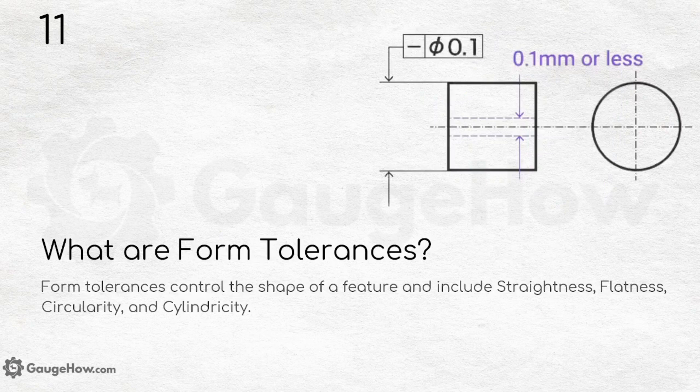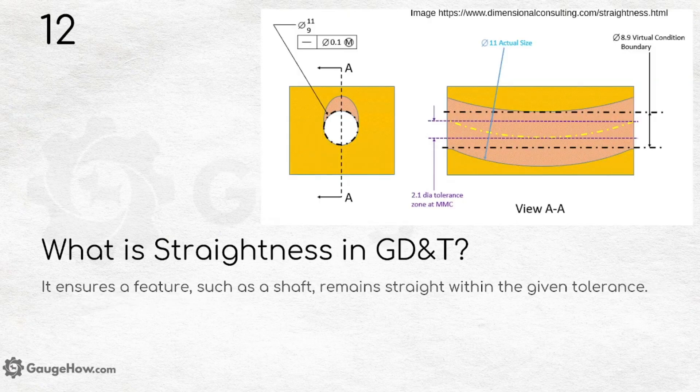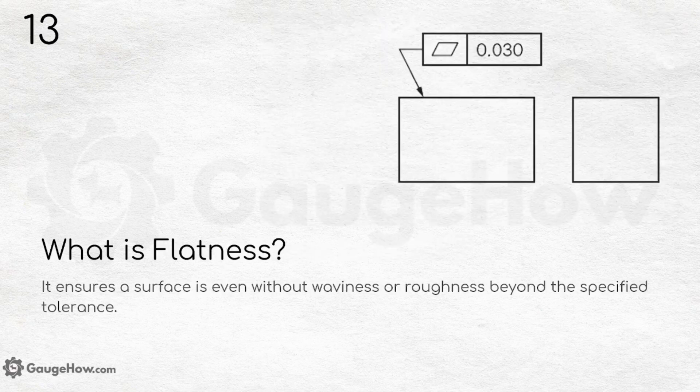What are form tolerances? Form tolerances control the shape of a feature and include straightness, flatness, circularity, and cylindricity. What is straightness in GD&T? It ensures a feature such as a shaft remains straight within the given tolerance. What is flatness? It ensures a surface is even without waviness or roughness beyond the specified tolerance.